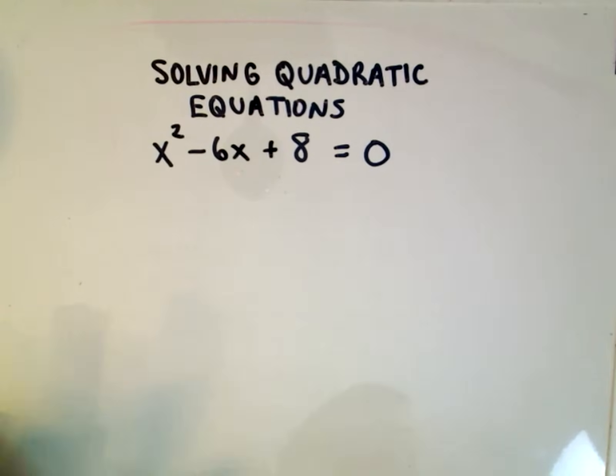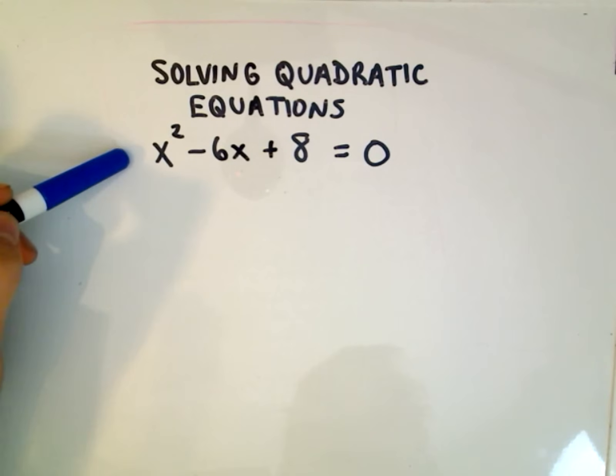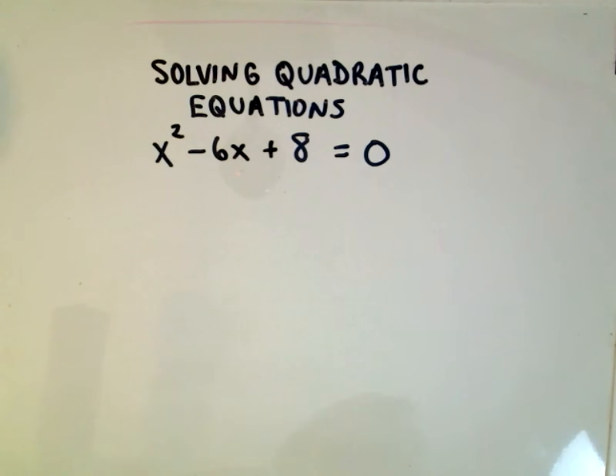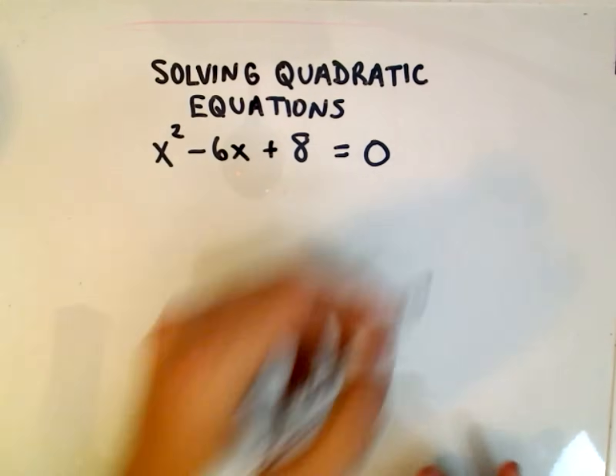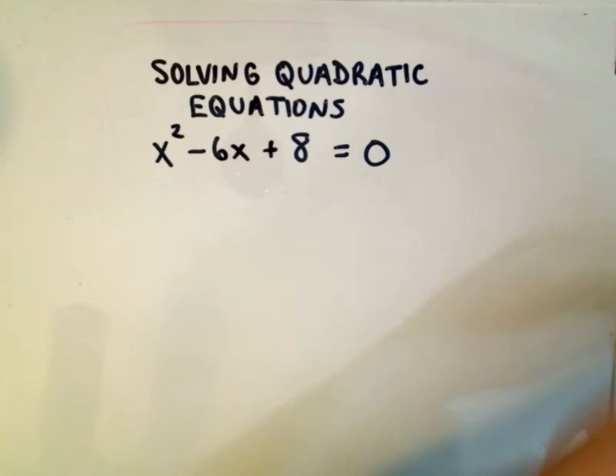So here we're going to solve the quadratic equation x squared minus 6x plus 8 equals 0. And you could definitely factor this one without too much trouble, but I want to talk about understanding the procedure here. So let's do it kind of the longer way.